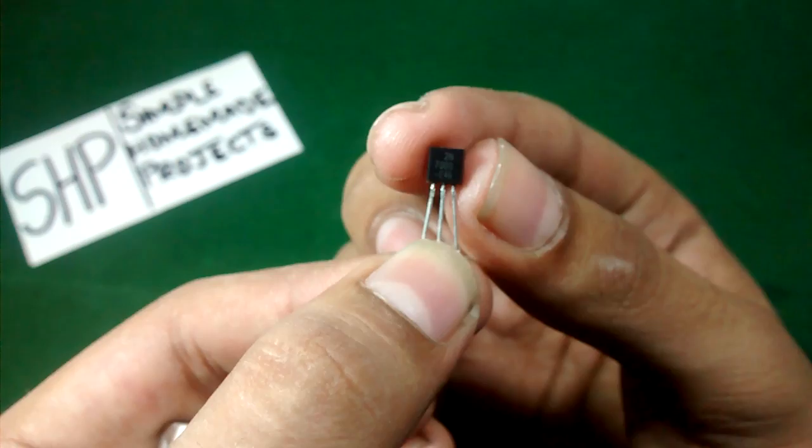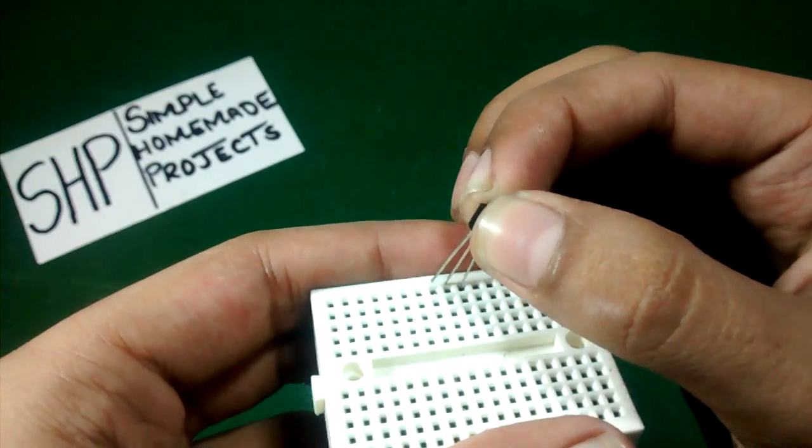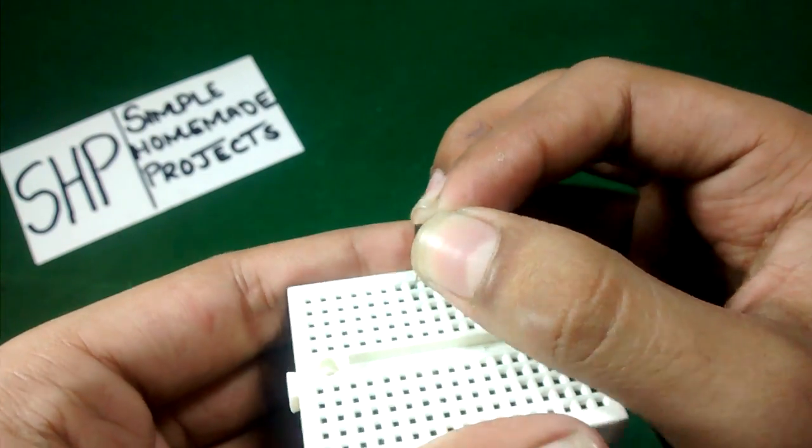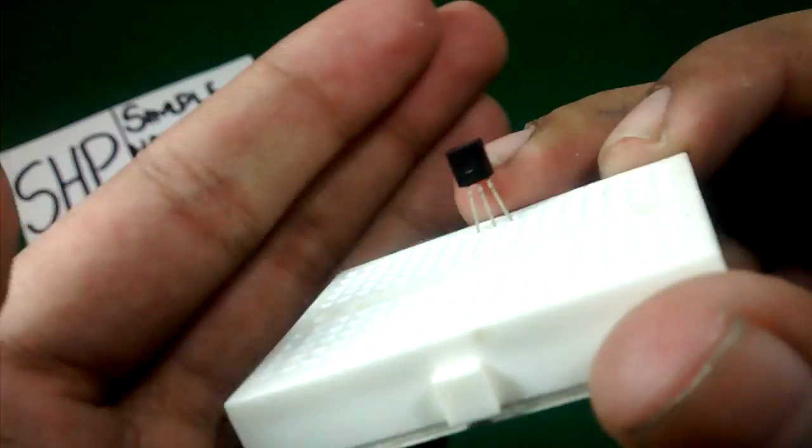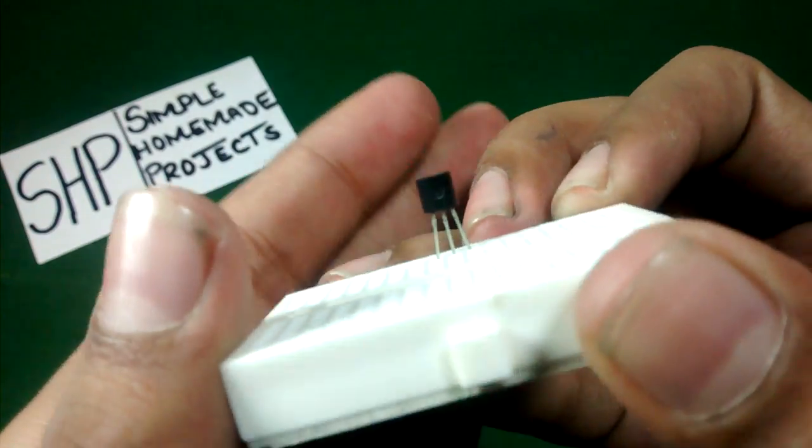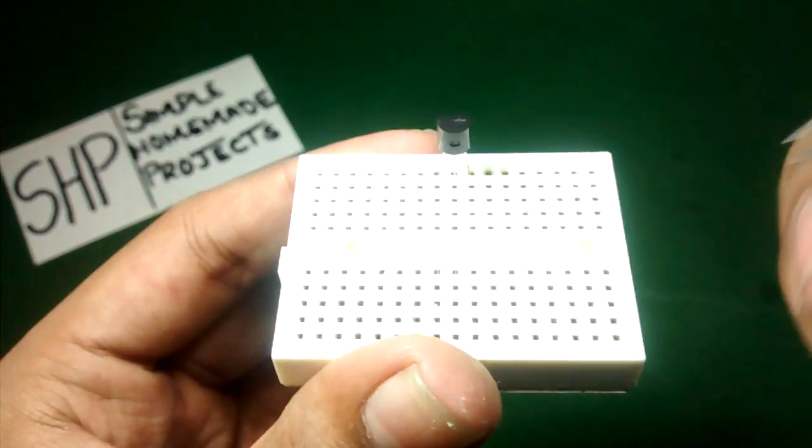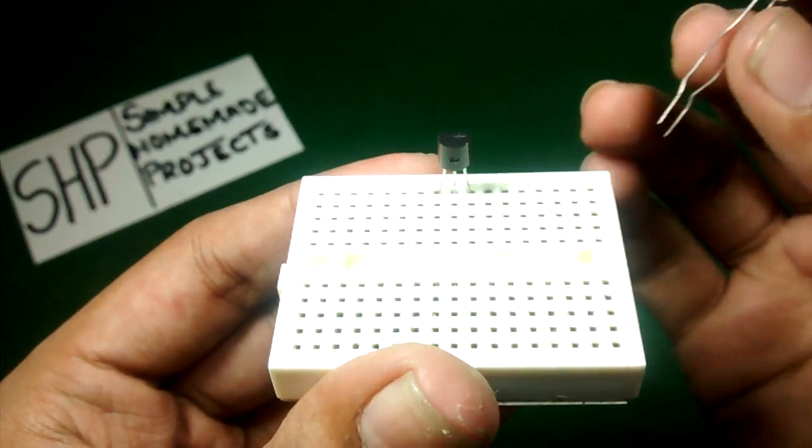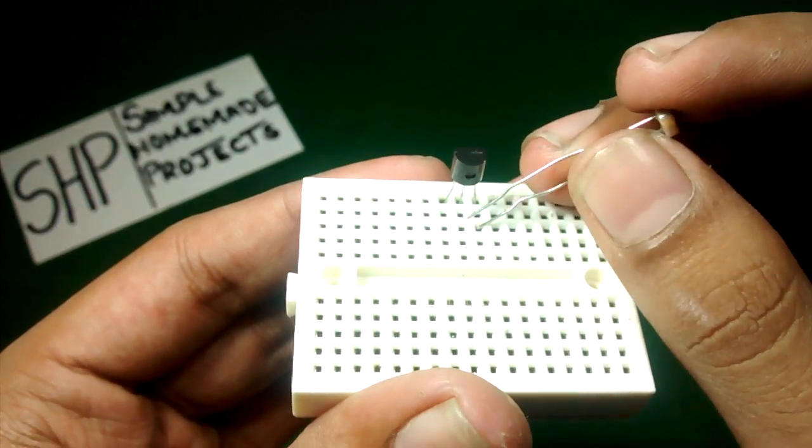First of all, place the transistor in the breadboard like this. Now place the LDR between the right pin and the middle pin.